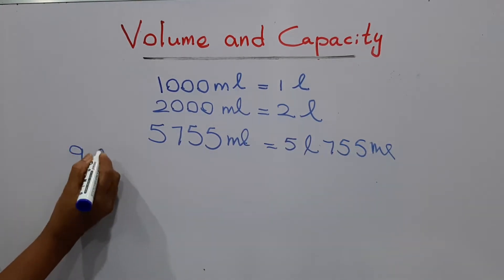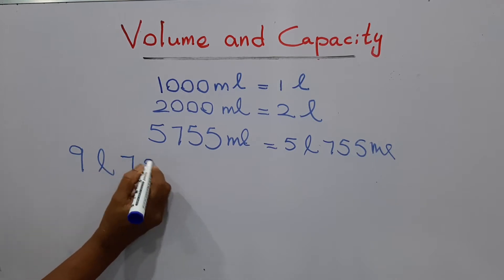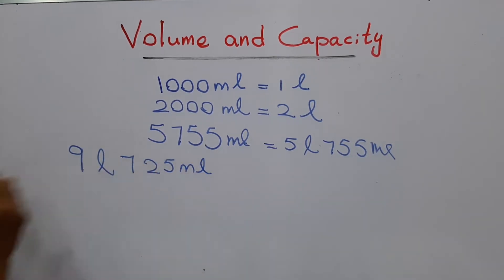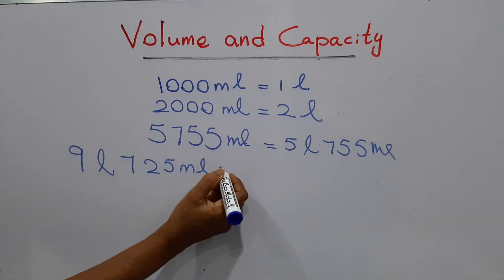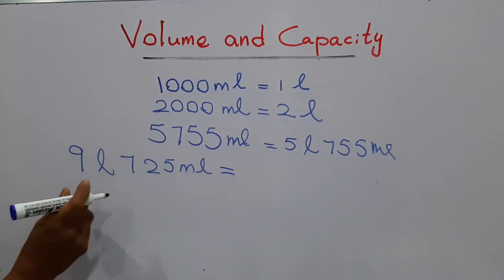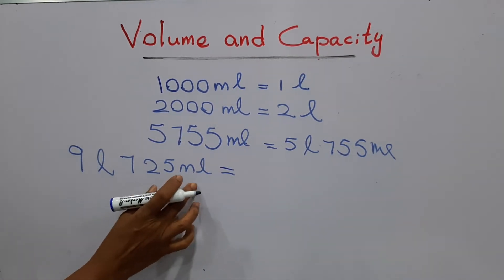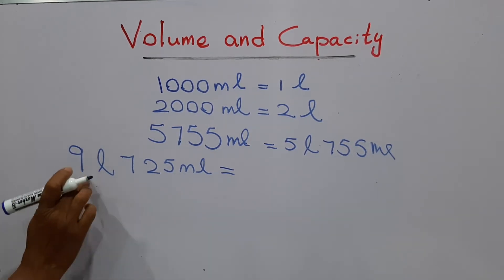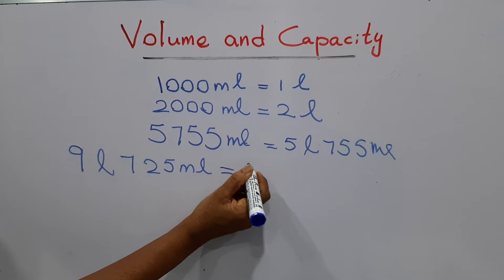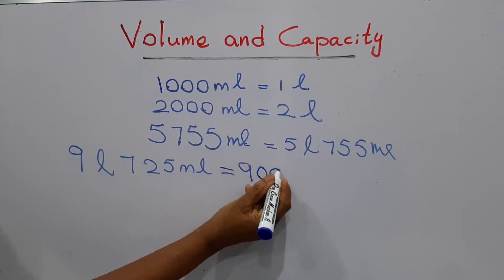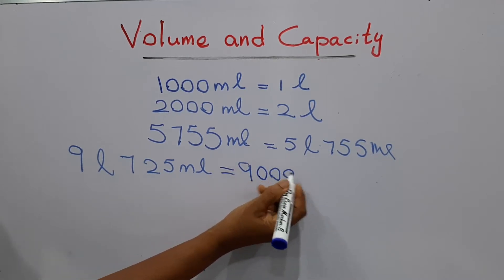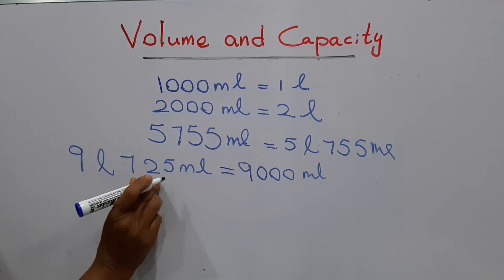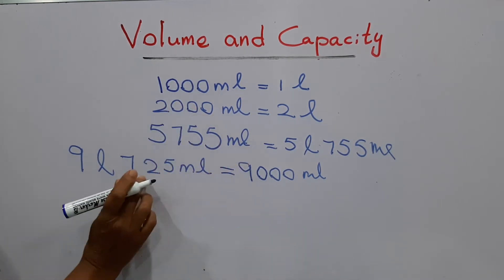We'll take another number: nine liters and seven hundred and twenty-five milliliters. Asking to write in milliliters. Nine liters means how many milliliters altogether? That means nine thousand milliliters and another seven hundred and twenty-five milliliters. This is very important.